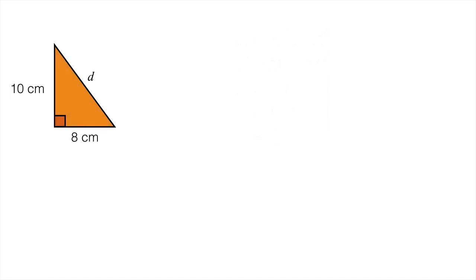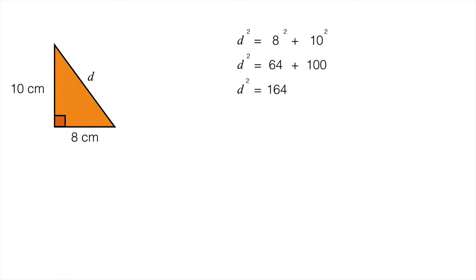On to the next example — this time we need to find the missing length D. D squared will be equal to 8 squared plus 10 squared. 8 squared is 64 and 10 squared is 100, so D squared is 164.